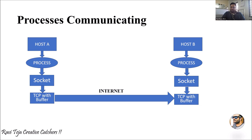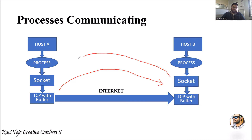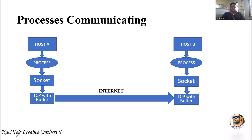Using the TCP protocol with a buffer and the internet, the data is transmitted to Host B. If Host B wants to send a message back to Host A, the same process is involved. So processes communicating between multiple hosts requires: a host machine, a process for execution, a socket as gateway, a protocol like TCP with a buffer, and the internet.